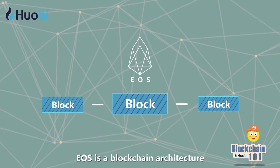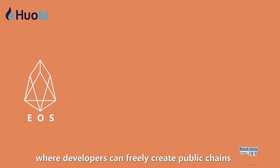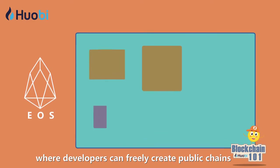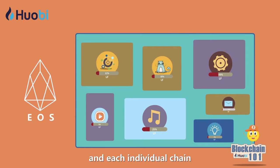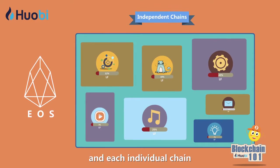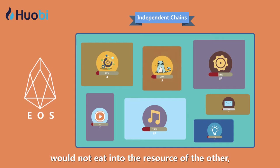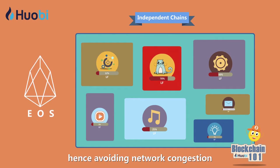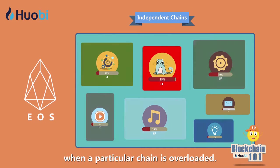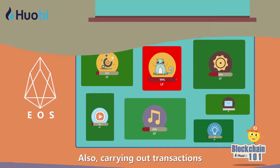EOS is a blockchain architecture where developers can freely create public chains on EOS, and each individual chain would not eat into the resources of the others, hence avoiding network congestion when a particular chain is overloaded.